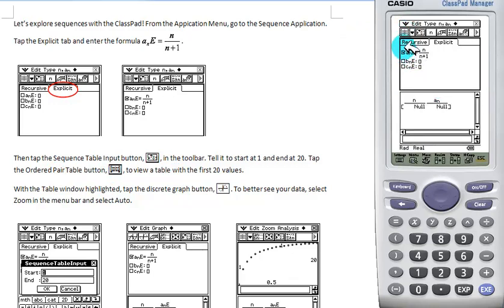We're going to select our sequence, and we'll have the first 20 terms all available to us.